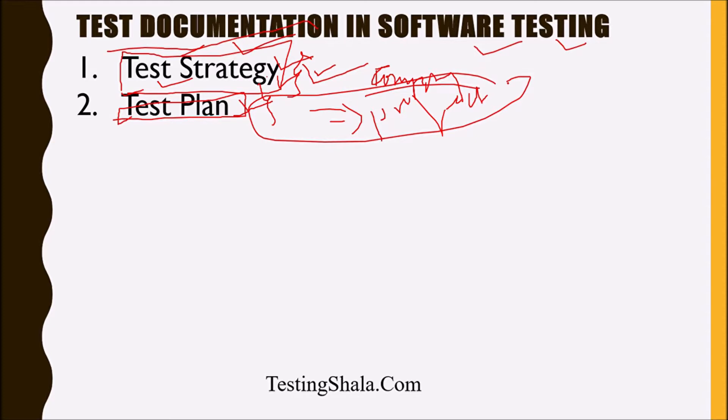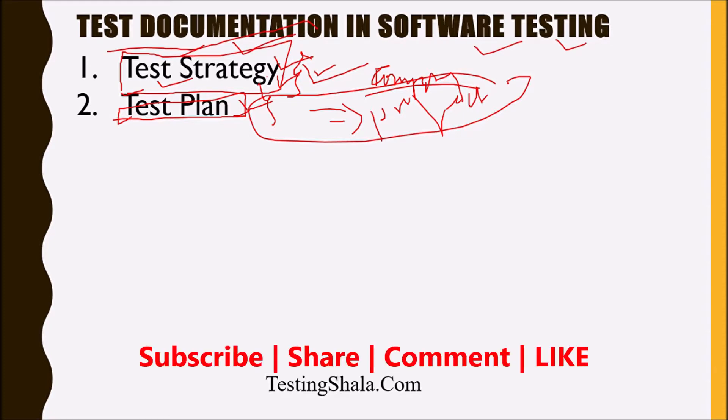In the test plan we talk about what features are being tested, what features are in scope, what features are out of scope, what to test and what not to test. We also talk about the different types of testing that will be performed, the entry and exit criteria for every testing phase, how to create a test closure report, estimations, resource planning, infrastructure, risk conditions — everything is documented in the test plan.